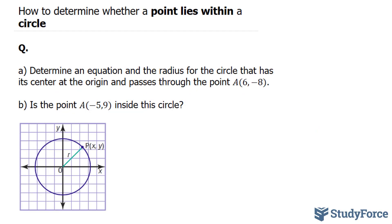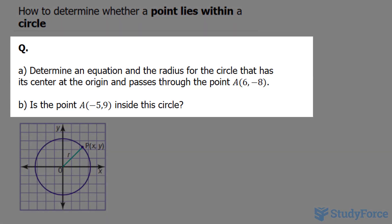In this lesson, I'll show you how to determine whether a point lies within a circle. The question reads, determine an equation and the radius for the circle that has its center at the origin and passes through the point A, which has the coordinates 6 and negative 8.